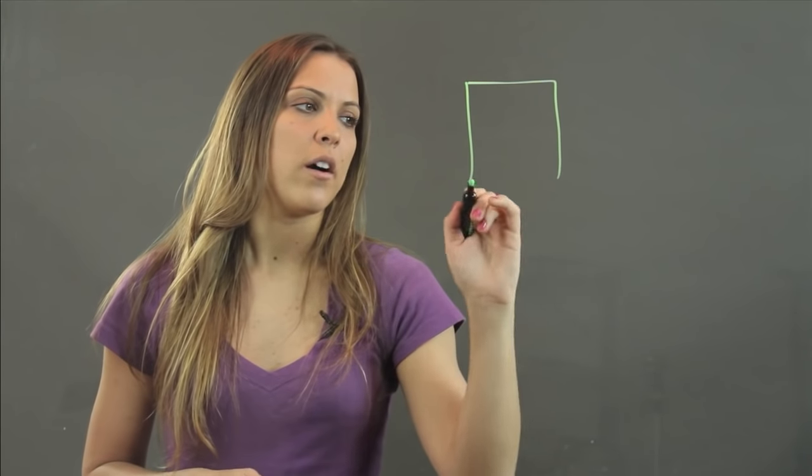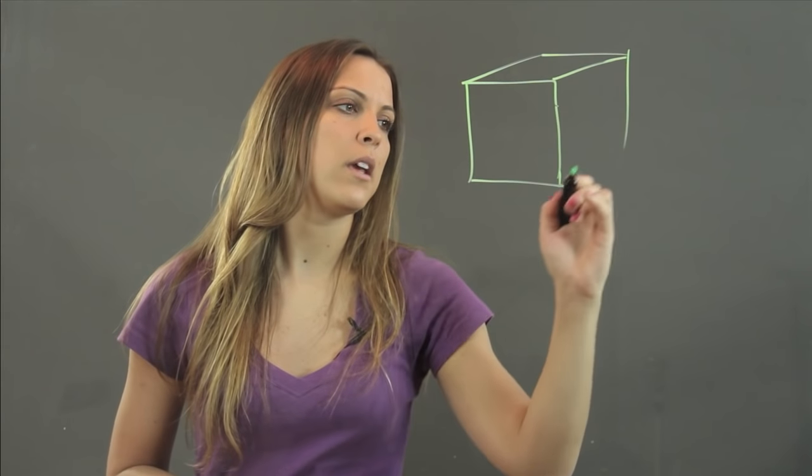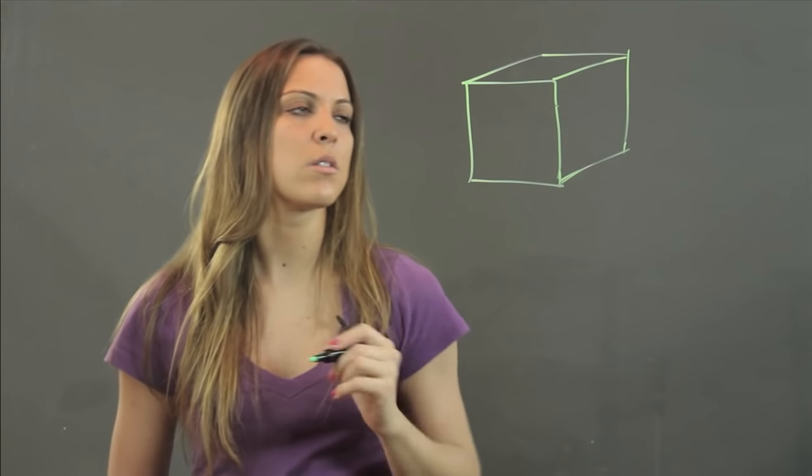So the length, width, and height of a cube are its three dimensions. We're going to go ahead and draw a cube, which we know is made of faces that are all squares.